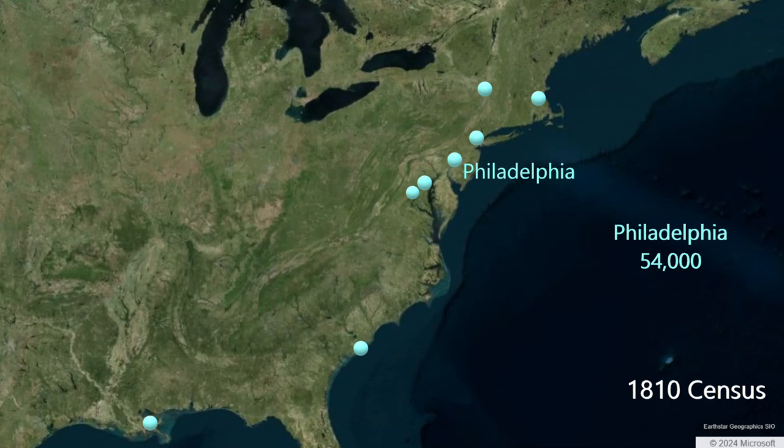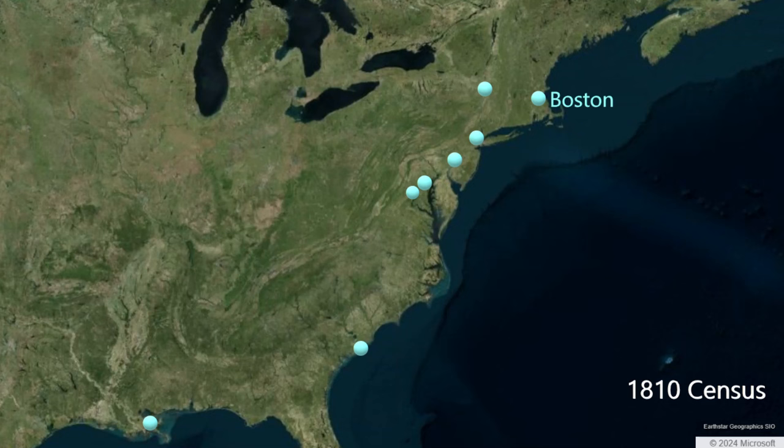However, the adjoining urban area of Northern Liberties Township adds another 20,000 to the greater Philadelphia area. Baltimore, Maryland, has 47,000 people in 1810. Boston, Massachusetts, has 34,000 residents. Just above Boston is Salem, Massachusetts, with 13,000.